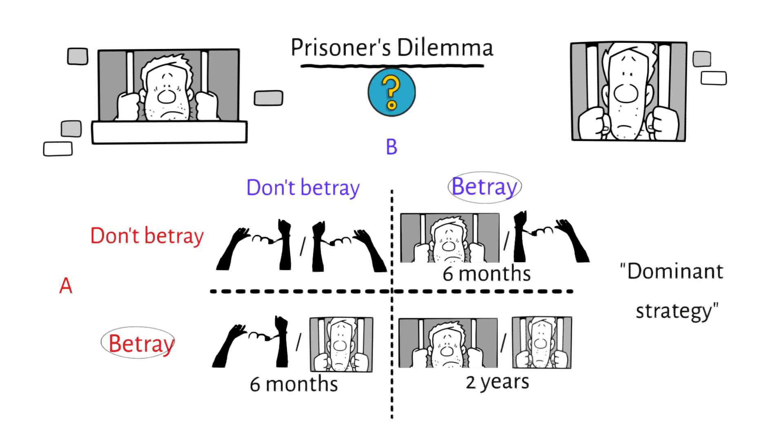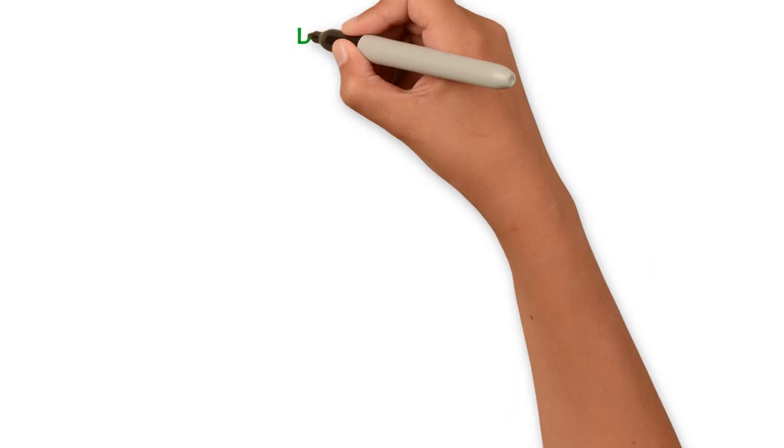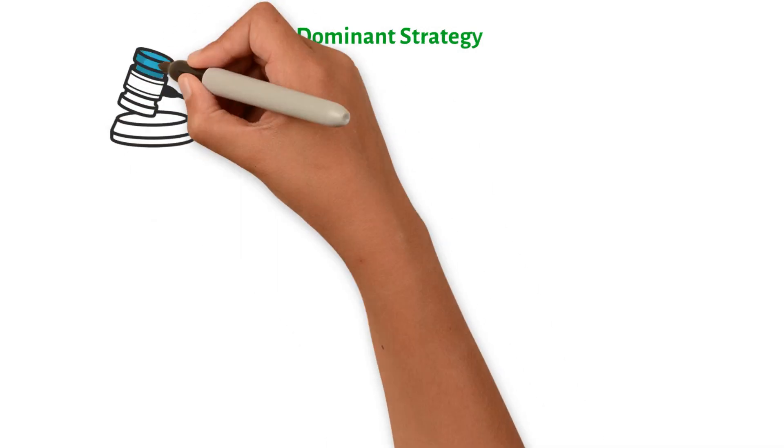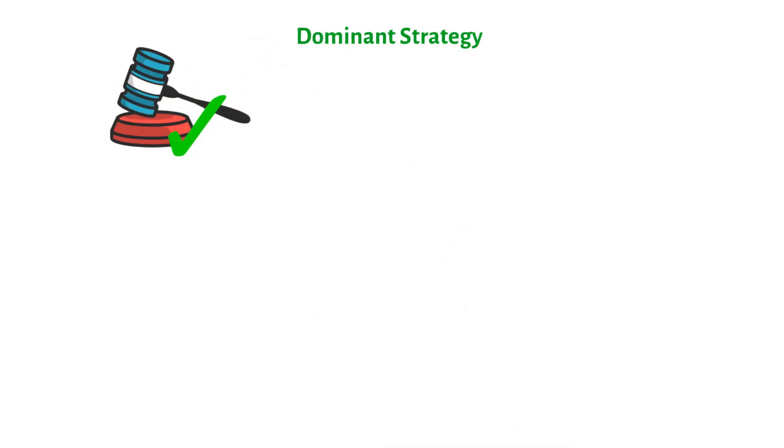Simply put, betrayal is your safest strategy, so it is called the dominant strategy. Game theory says that a dominant strategy is the one that is most likely to give the player the best result, no matter what the other players do.